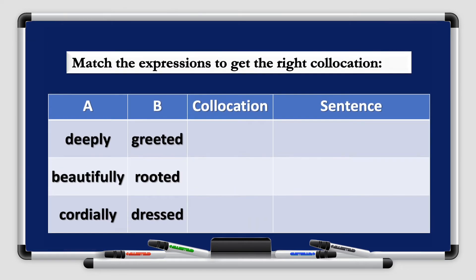Now that we've got a general idea on how to use or form collocations, let's match some expressions to get the right collocations. As you can see from the table, you have column A and column B. You're going to match the adverbs with the suitable adjectives in order to form a correct collocation and then we're going to write sentences.